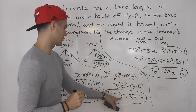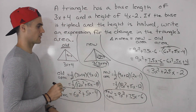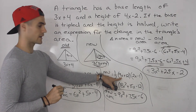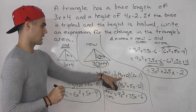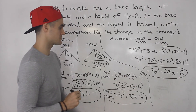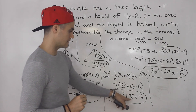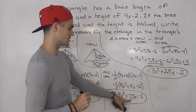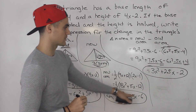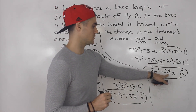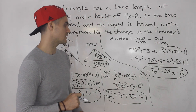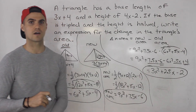We took the new area and subtracted the old area. We tripled the base to get 9x plus 12, and multiplied the height by one half to get 2x minus 1. I used decimals here, but you could use fractions — 7.5x could be written as 15 over 2, and 2.5x as 5 over 2. Either way, that is your final answer.